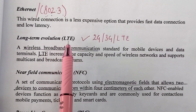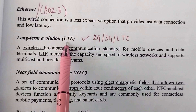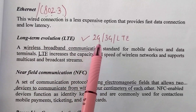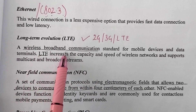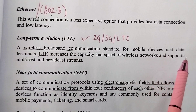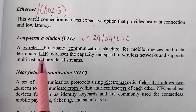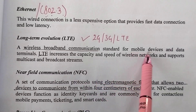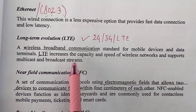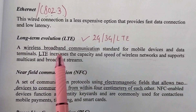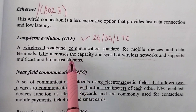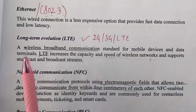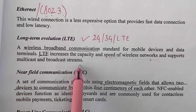Another protocol used in the link layer is LTE. The full form of LTE is Long Term Evolution. It can come in variants of either 2G or 3G. It is a wireless broadband communication standard for mobile devices and data terminals, providing wireless connection for broadband communication. It increases the capacity and the speed of wireless networks. It also supports multicast and broadcast streams.